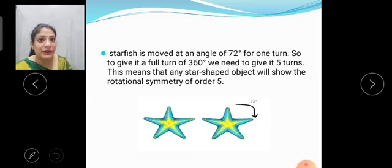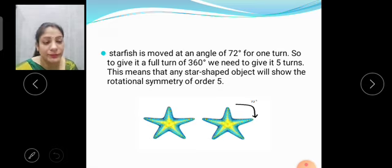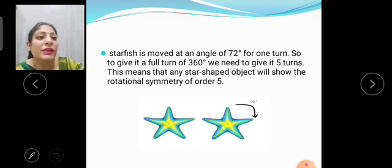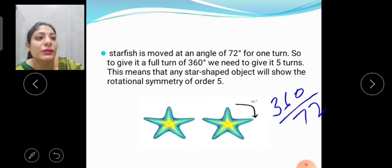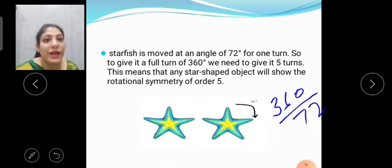Now, come to the real life example. Here, the starfish is moved by the angle 72 degrees for one turn. So to give a full turn of 360, we need to give how many turns? We will divide 360 by 72. So it becomes 5 turns. This means that any star-shaped object will show rotational symmetry of order 5.